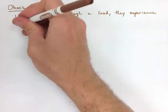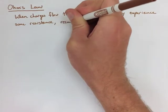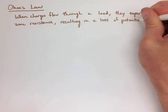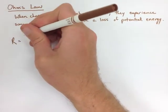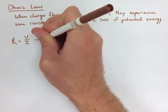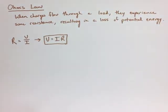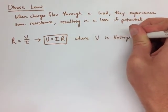Ohm's Law states that the resistance is equal to the voltage divided by the current, or what we actually change that around to is the voltage equals the current times resistance, where V is the voltage in volts, I is the current in amps, and R is the resistance measured in ohms.